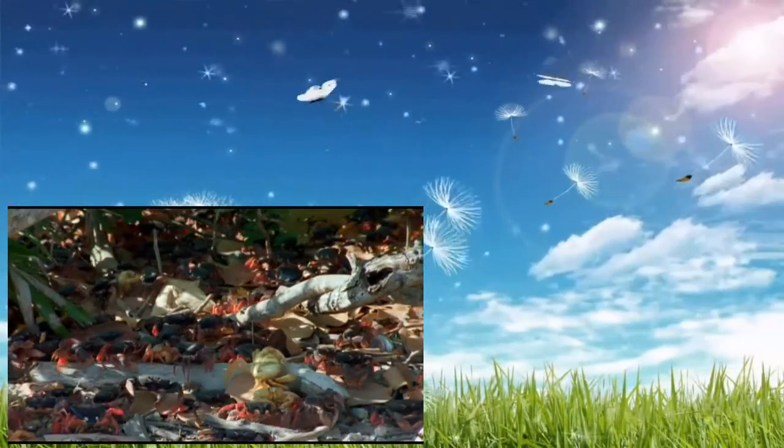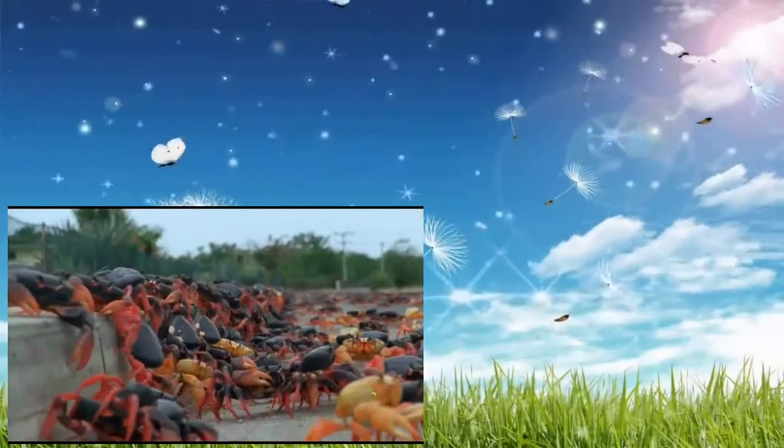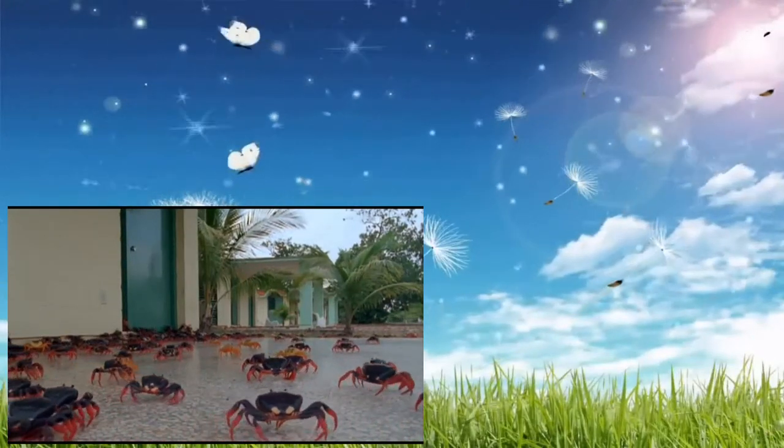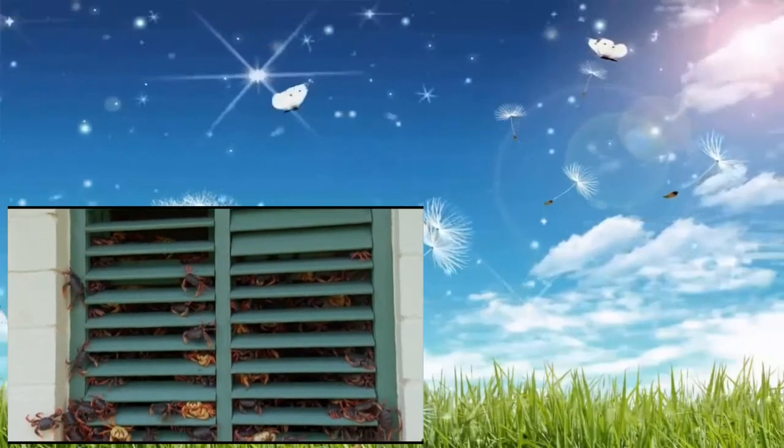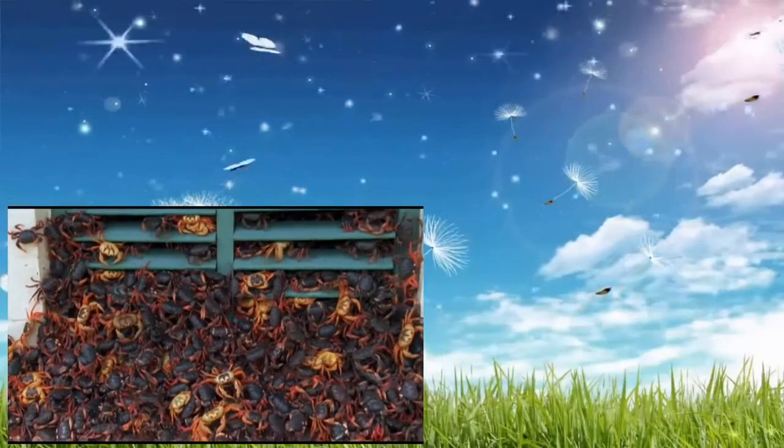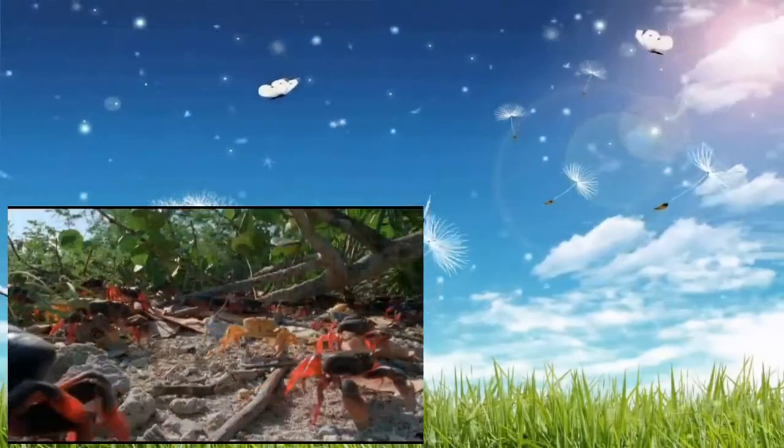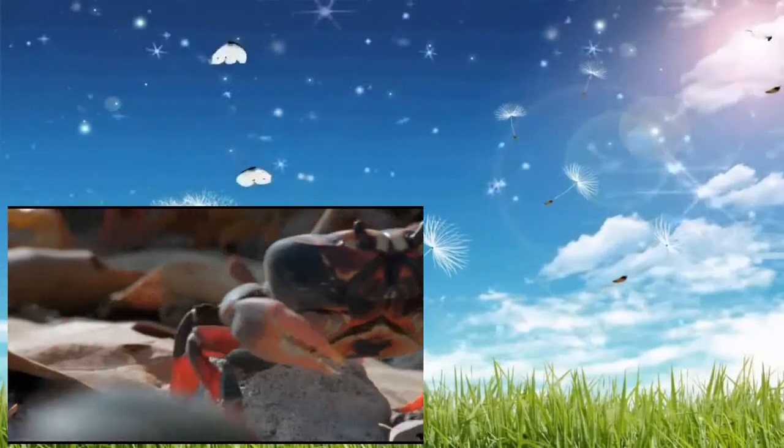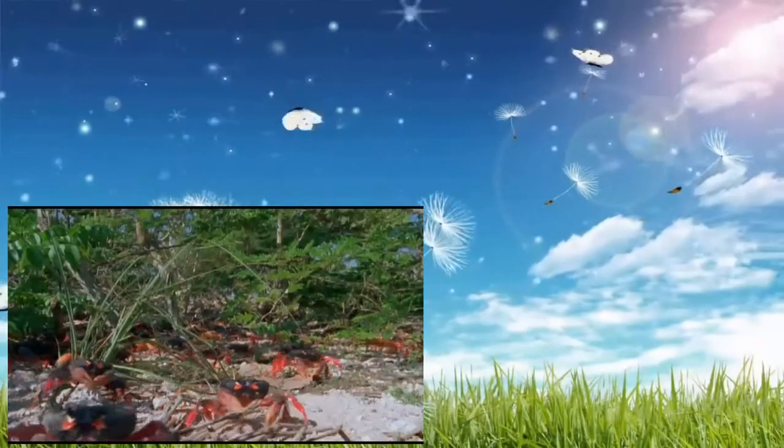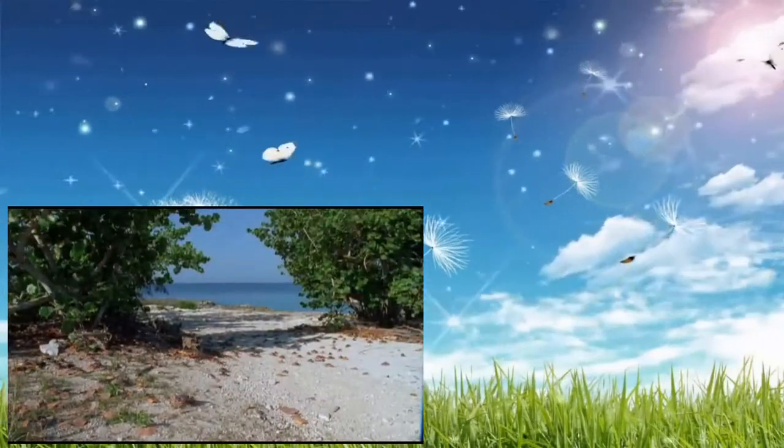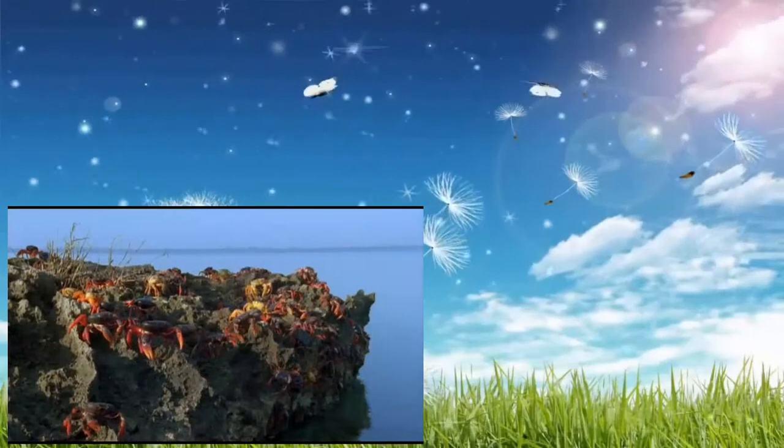Millions of female red crabs march together in one of the largest mass migrations in the world. This marathon can cover up to six miles and take days, especially if they take a wrong turn. So where are they going? And why?